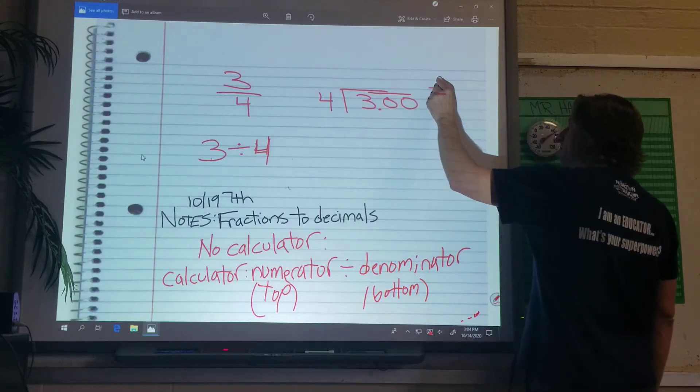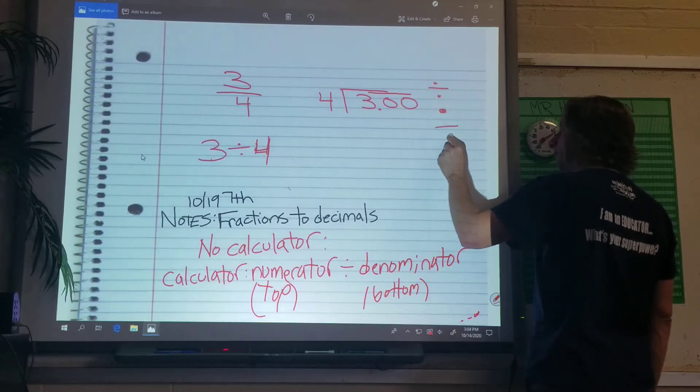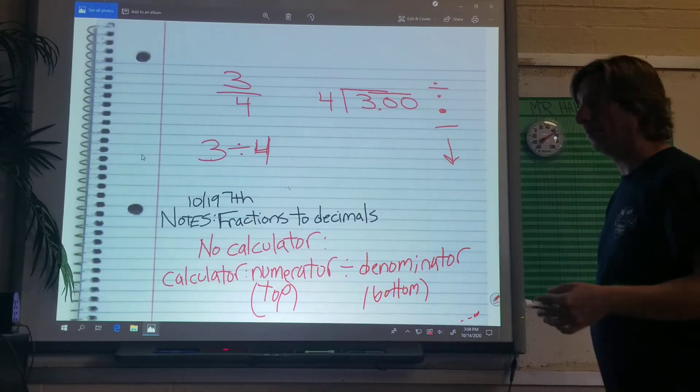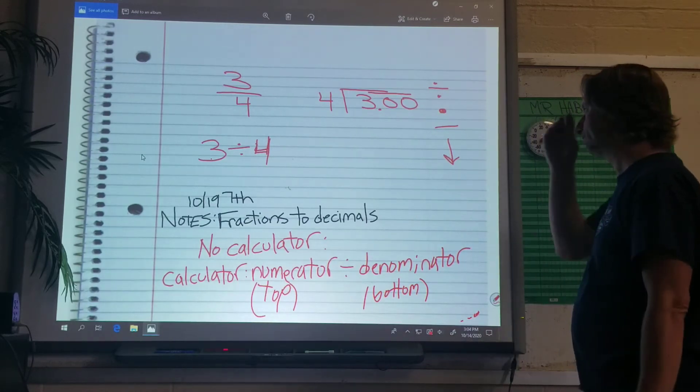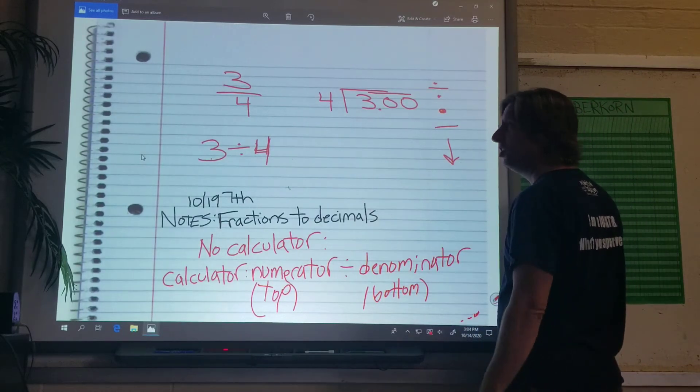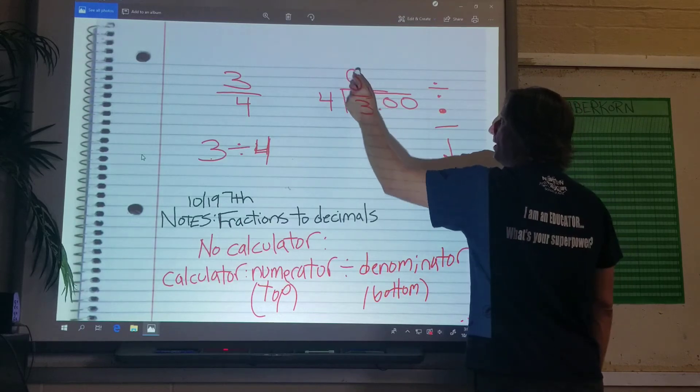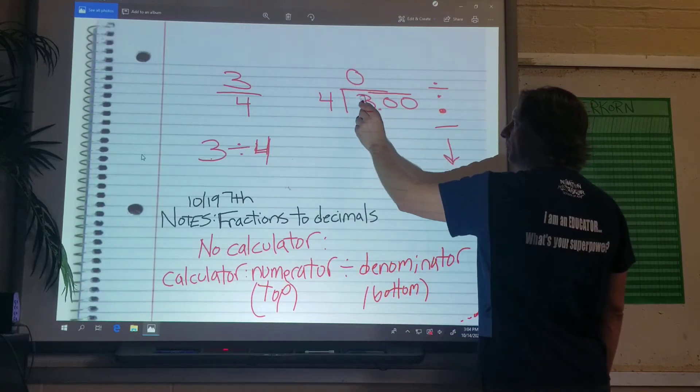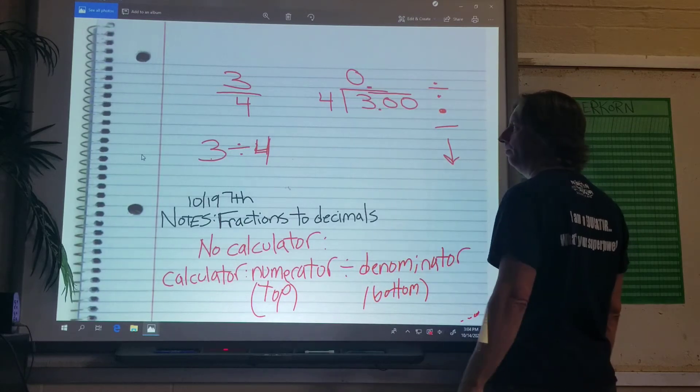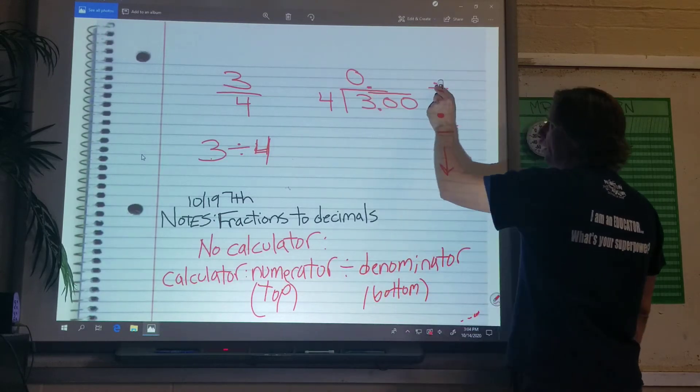I'm going to write our four steps of division over here. Divide, multiply, subtract, and bring down. And we'll refer to those as we go through the problem, right? So dividing. Will four go into three? No, it won't. If it doesn't, we have to put a zero here, okay? Make sure that you're neat. Put your zero right above your three, and then put your point straight up. Very important, putting that point straight up, okay?